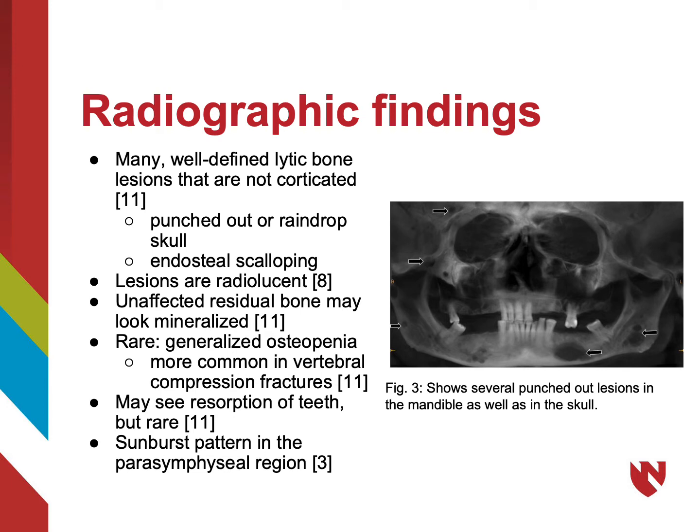Lesions are radiolucent and unaffected residual bone may look mineralized. It is rare, but there can be generalized osteopenia, and that is more common in vertebral compression fractures. There can be reabsorption of teeth, but that is rare. Occasionally, a sunburst pattern in the parasymphyseal region can be seen, though this is also rare and more likely to occur with osteosarcoma and would be seen in the sternum.